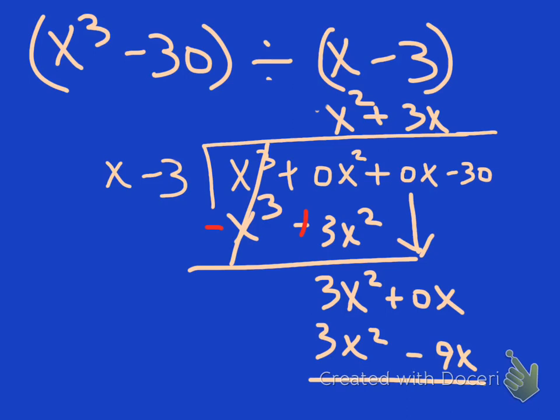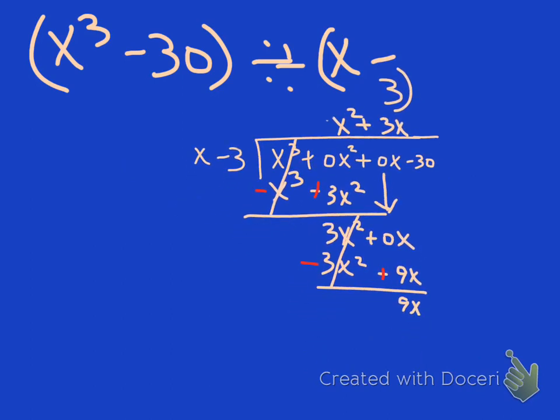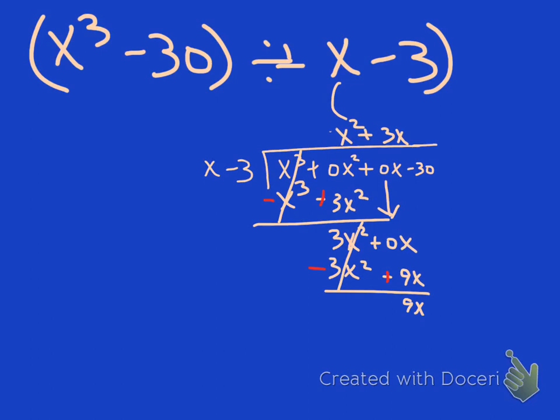And we'll subtract. I'll change my color so that we'll notice that these will cancel. And I'll have 9x. I'm losing room here. Okay, bring down my minus 30.